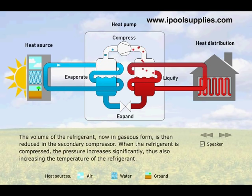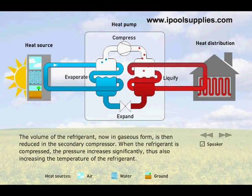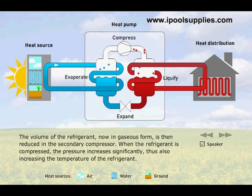The volume of the refrigerant, now in gaseous form, is then reduced in the secondary compressor. When the refrigerant is compressed, the pressure increases significantly, thus also increasing the temperature of the refrigerant.